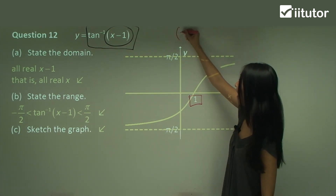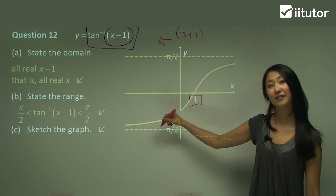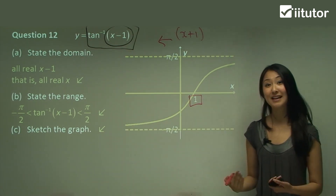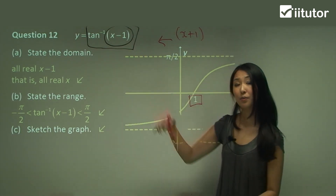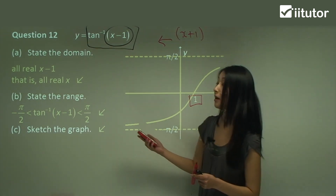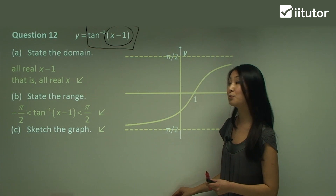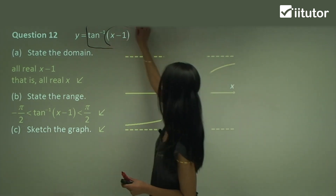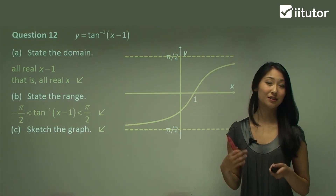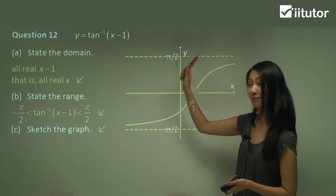If you had x plus 1, it would shift the curve to the left by 1. Although this doesn't change the domain and range, you must be careful about how the input changes the position of the curve. Minus any number moves the graph to the right by that amount, and plus any number moves it to the left by that amount. This is specific to inverse tangent — for inverse cosine and sine, the domain and range determine the graph entirely, so this shifting rule is something extra to remember for inverse tangent.